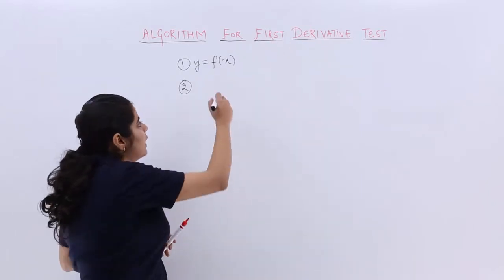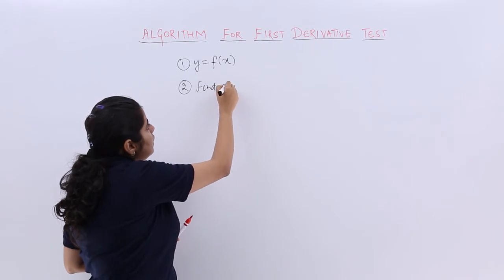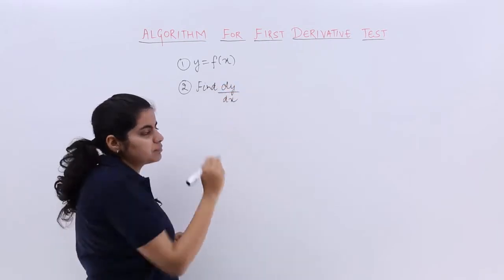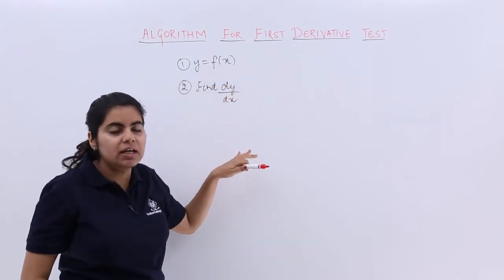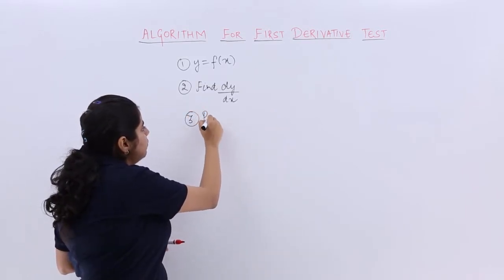Since this is the first derivative, you have to find out dy by dx, which is the first derivative. After finding out the differentiation of y with respect to x, the next step would be you have to simply put dy by dx equal to zero.